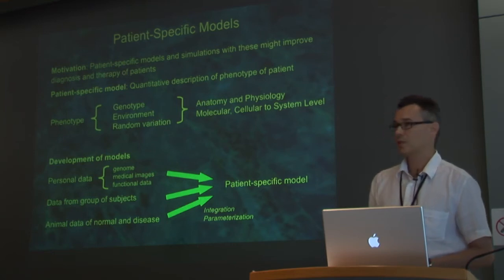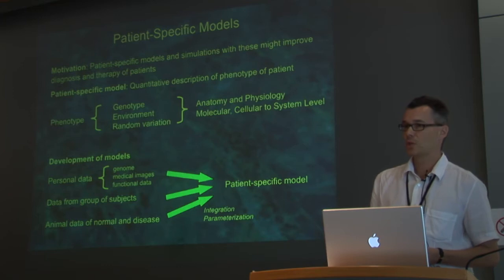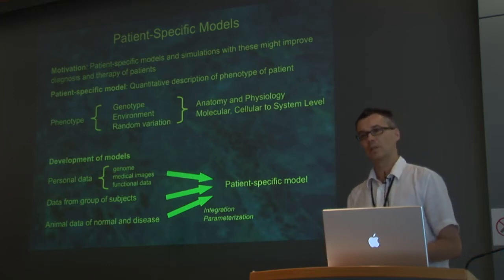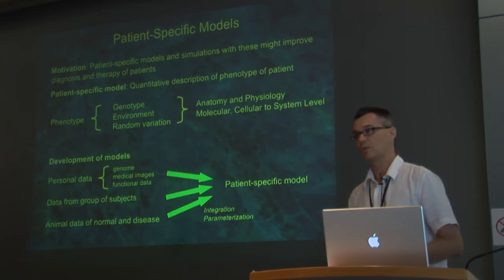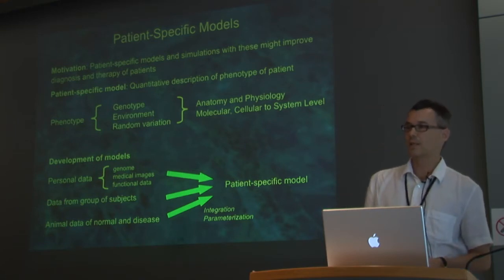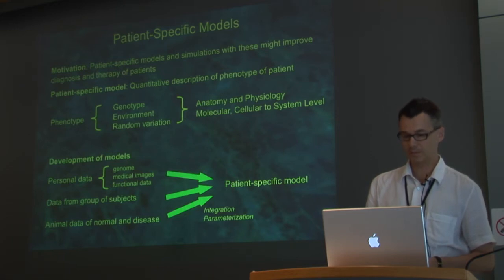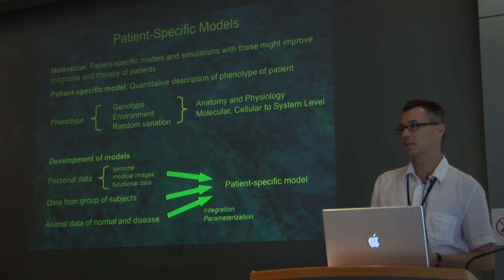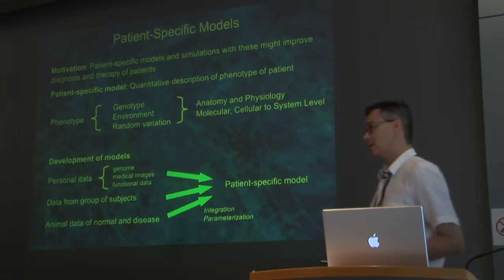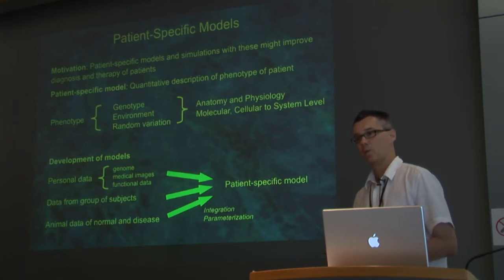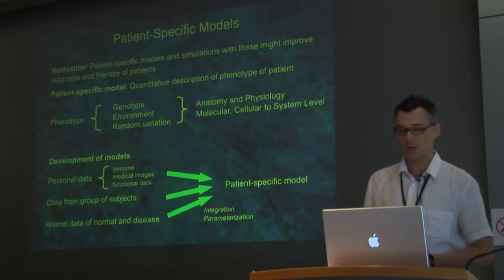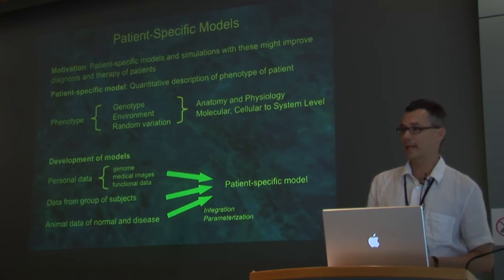Patient-specific modeling is an approach to improve diagnosis and therapy by using a quantitative description of an organ, a whole system, or — as we cover here — at the cellular and subcellular level. A good definition is a quantitative description of the phenotype of a patient, covering anatomy and physiology from all levels. These models are generated by taking personal data — imaging data, genomic data, functional data like an EKG — and since this is commonly not enough, further sources are necessary: data from large patient populations, from animals in normal or disease states, combined to generate a patient-specific model.